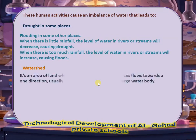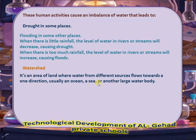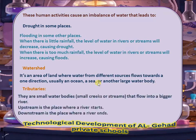Watershed: it's an area of land where water from different sources flows towards one direction, usually an ocean, sea, or other large water body. Tributaries: they are small water bodies — small creeks or streams that flow into a bigger river.